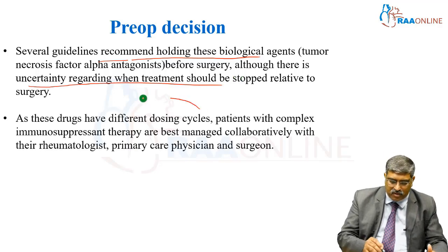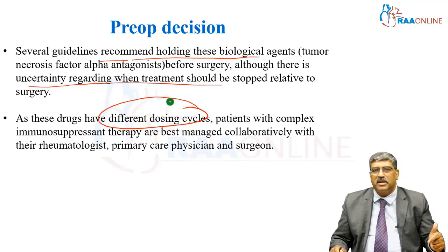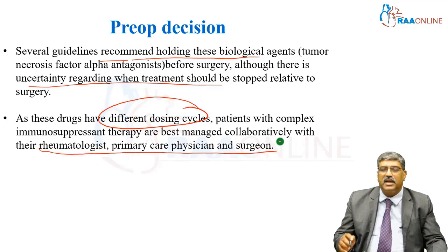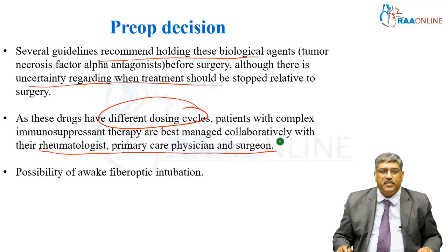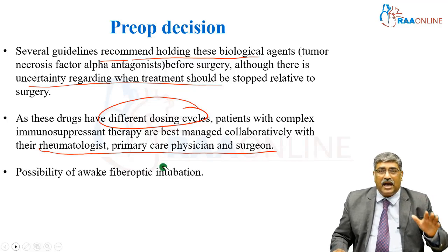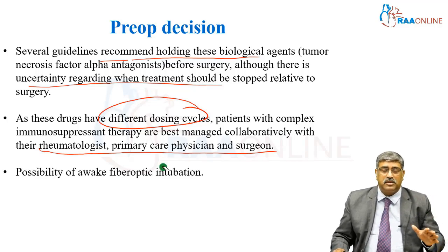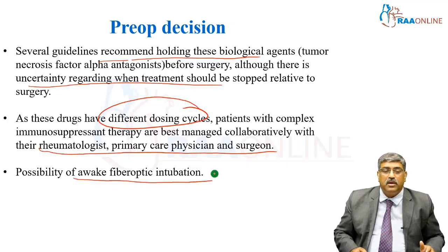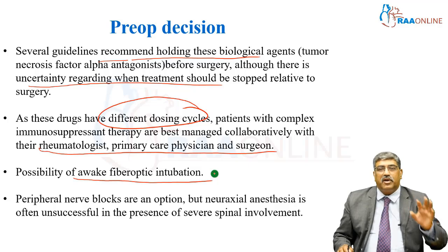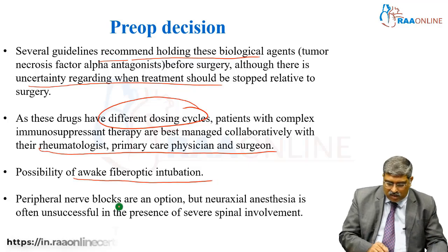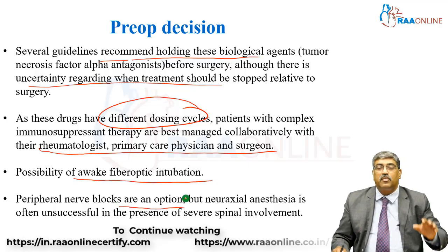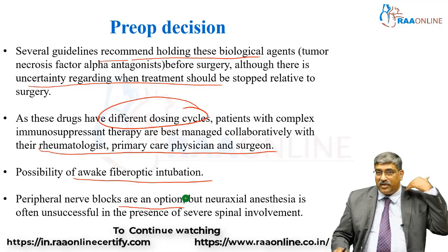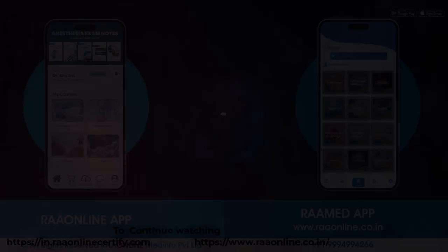As mentioned earlier, different dosing cycles and complex therapy make it better to involve the rheumatologist, primary care physician, and surgeon. Always discuss airway management with the patient in ankylosing spondylitis — you have to go for an awake fiber optic intubation. Peripheral nerve blocks are an option, but neuraxial blockade is usually unsuccessful in the presence of severe spinal involvement.